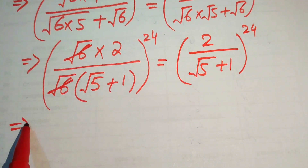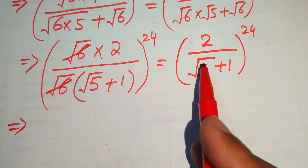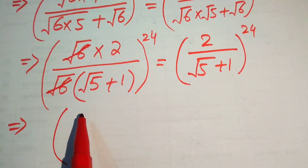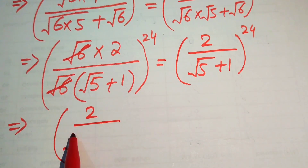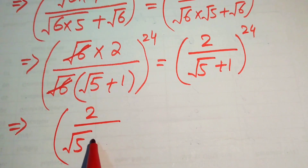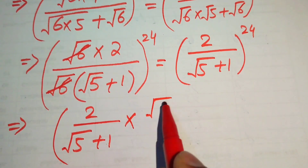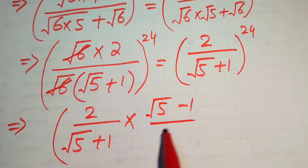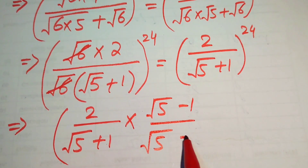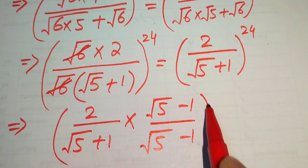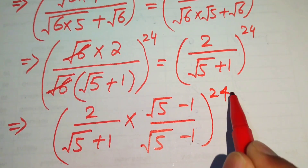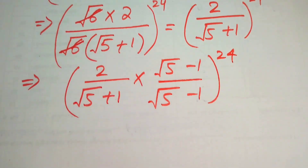Now we rationalize this expression by multiplying by (square root of 5 minus 1) over (square root of 5 minus 1), and the whole thing is raised to the power of 24.